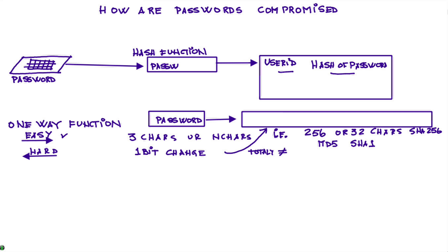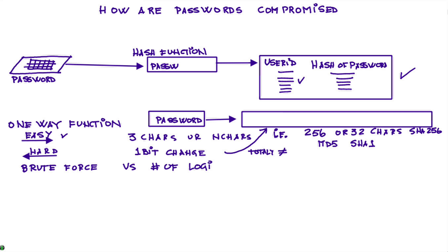So why is it a problem when a password database gets compromised? If all the bad guys get is a bunch of user IDs and hashes, and the hash is a one-way function, what's the problem? Also, if you try to guess passwords using brute force, many sites limit the number of login attempts — after three fails the account gets locked. So how do passwords actually get compromised?